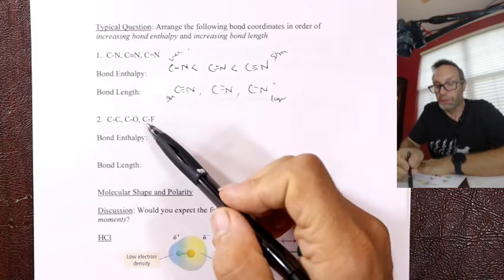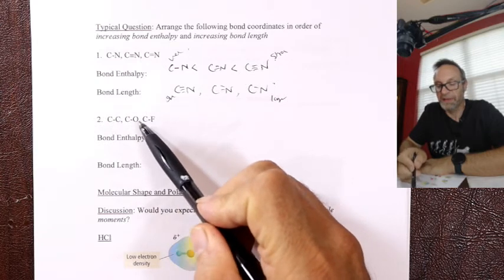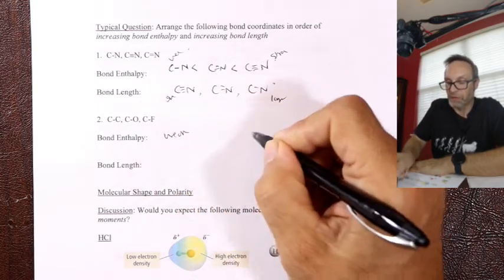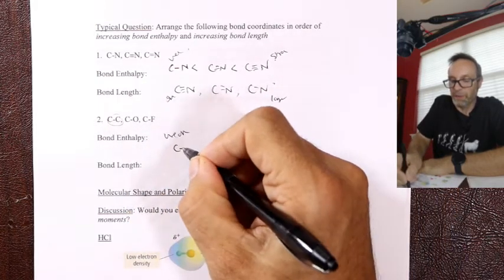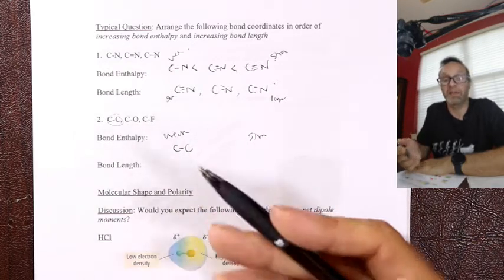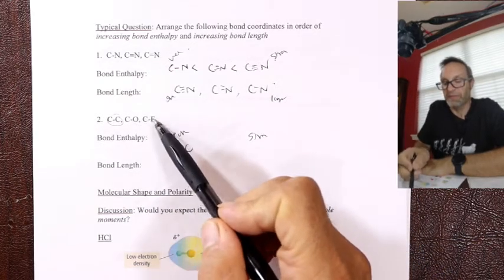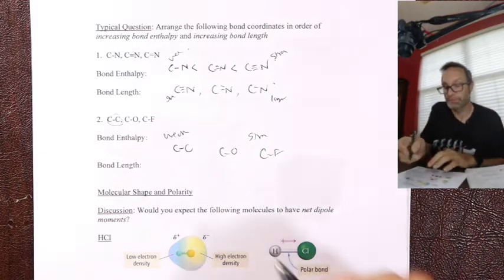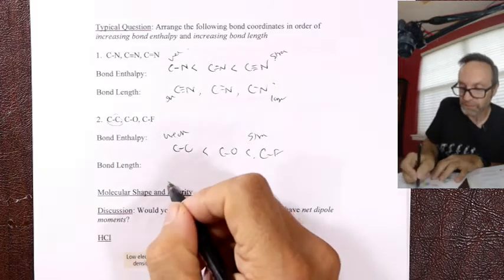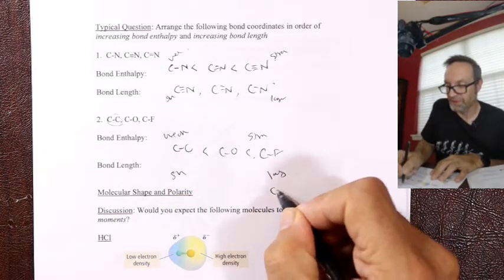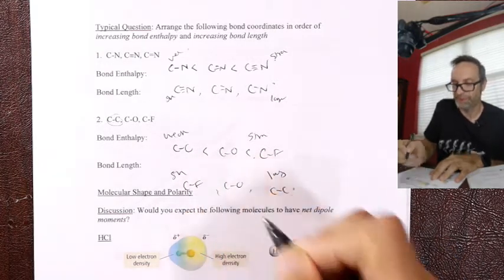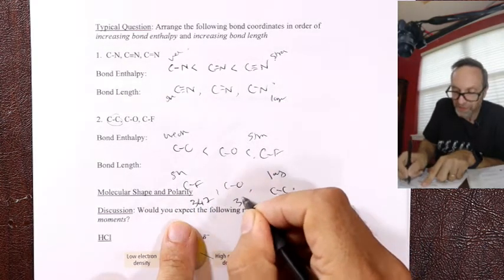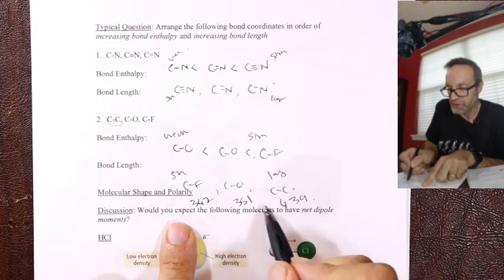Now within the same league - all single bonds - we're only looking at differences in electronegativity. For bond strength weak to strong: C-C has no polar covalent character at all (pure covalent), then C-O, then C-F (fluorine is the most electronegative - it's the winner). For bond length short to long: the shortest is the strongest - C-F, then C-O, then C-C. The numbers are 439, 351, and 347 kilojoules per mole respectively. You can look up bond lengths and bond strengths in the appendix.